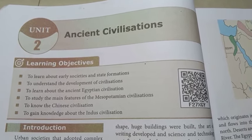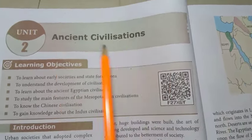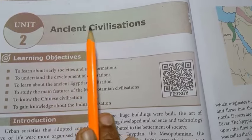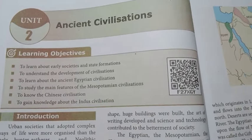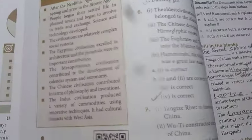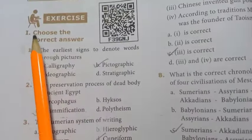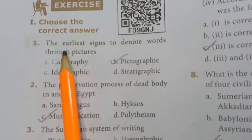This video is 9th Standard Social Science, Unit 2, Ancient Civilizations. Lesson 1, Bookback exercise. Turn to page 330. Roman number 1: choose the correct answer. First one: the earliest signs to denote words through pictures.